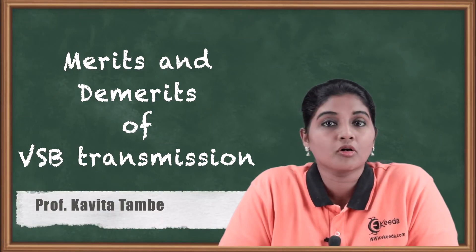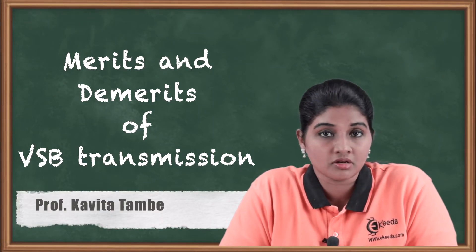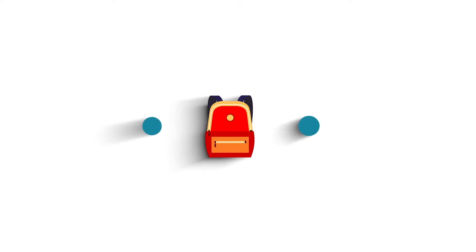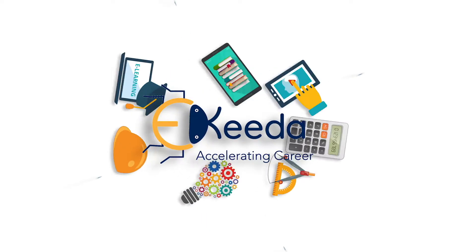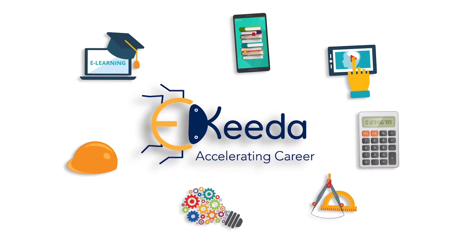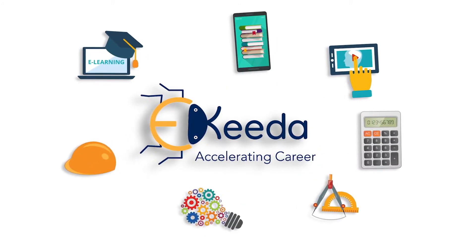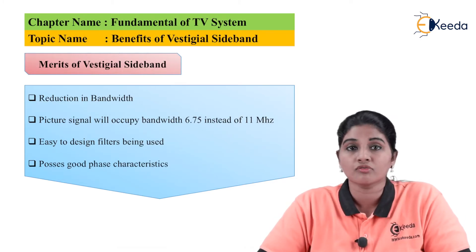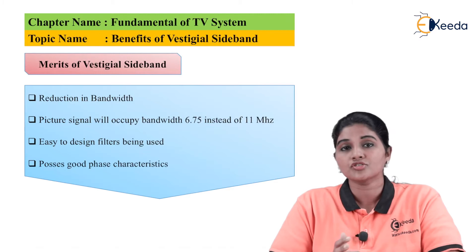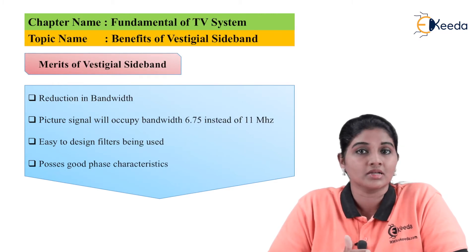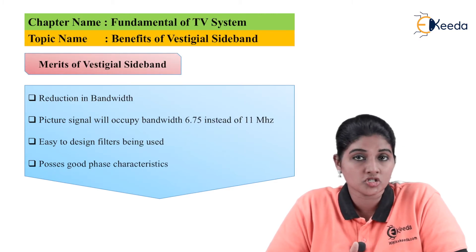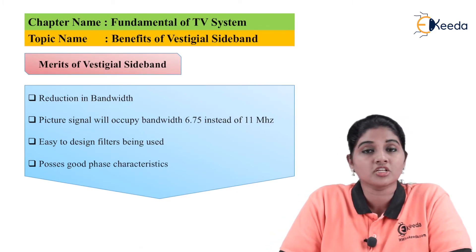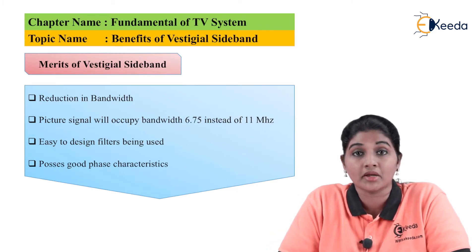Hello friends, in this video we are going to talk about the various merits and demerits related to the vestigial sideband. Vestigial sideband plays an important role in transmission of the video signal in case of television systems. We are going to discuss the merits, that is advantages, and demerits, that is limitations and disadvantages, of vestigial sideband.